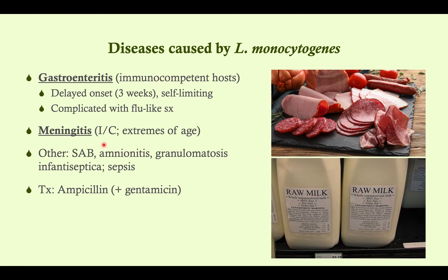Meningitis from Listeria only occurs in vulnerable patients: immunocompromised people, alcoholics, and the extremes of age — under three months and over 50, particularly the very elderly. Symptoms are the same as all bacterial meningitides; lumbar puncture and CSF analysis will show high white cells and low glucose as expected. You won't be able to diagnose Listeria on culture because it takes too long to grow, so you treat empirically. When dealing with meningitis in a baby, older person, or immunocompromised patient, change your treatment regimen to cover Listeria.